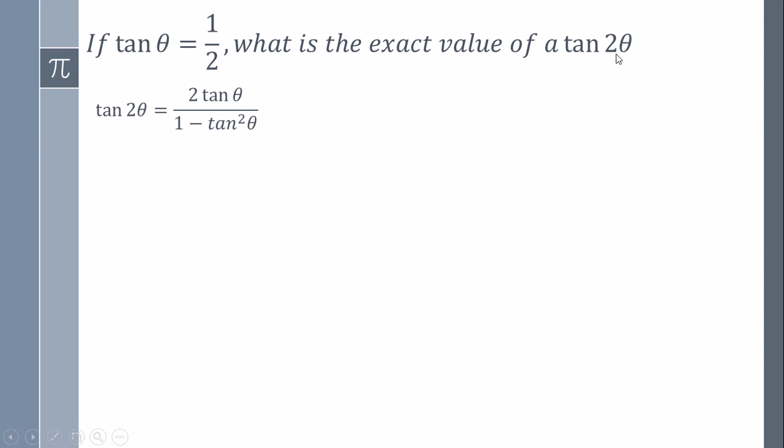So what we have to know in this case is the trigonometric identities. In this case, tangent of 2 theta is defined as 2 tangent theta over 1 minus tangent squared theta.